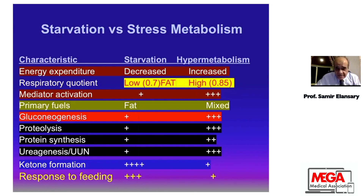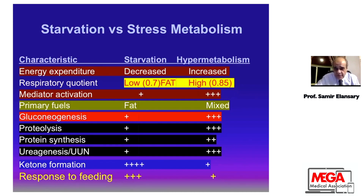In starvation, energy expenditure is decreased — about 0.6 to 0.7 — but it is increased in cases of hypermetabolism, reaching about 0.85. This means the patient consumes all feeding ingredients: carbohydrates, protein, fats, and so on, depending mainly on muscle, causing muscle wasting if we do not support the patient. Respiratory quotient is about 0.61 to 0.7 in starvation, and high at 0.85 in hypermetabolism. Mediator activation is highly activated in hypermetabolism. The starved patient depends mostly on fat and ketones, whereas the hypermetabolic stressed patient depends on maximum macronutrients.